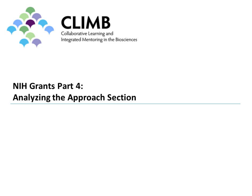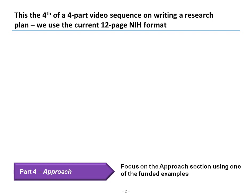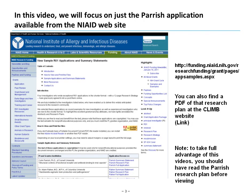Welcome to our fourth video in analyzing NIH style grant applications, focusing on the approach section. In this video we're going to focus on the approach section using one of the funded examples, following the current 12-page NIH format. We're going to focus on the Parrish application, available from the NIAID website. You can also find a PDF of that research plan at the CLIMB website. To take full advantage of this video, you should have read the Parrish research plan before viewing.